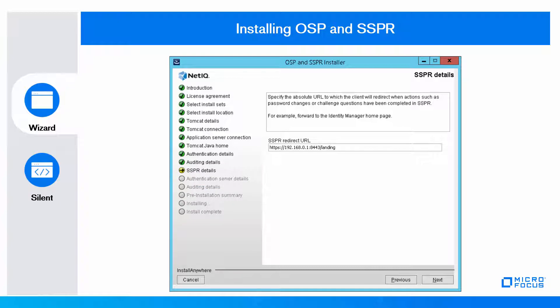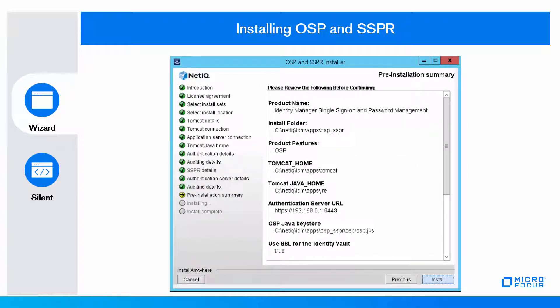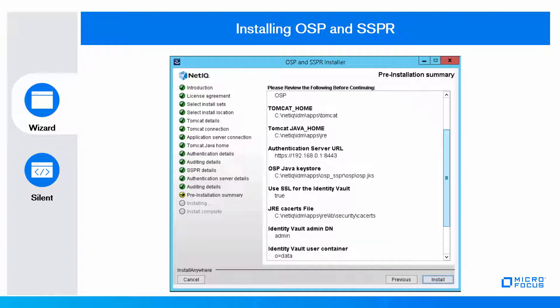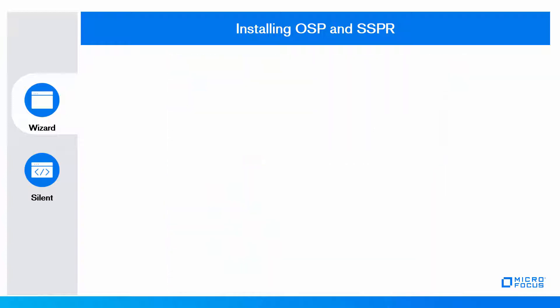In the SSPR details page, ensure that the SSPR redirect URL is correct. Fill in the details for the other pages until you see the pre-installation summary page. In the pre-installation summary page, review your settings. If the settings are correct, click Install.